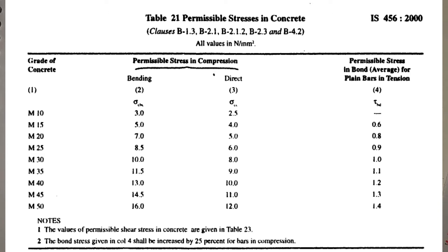For direct compression the factor of safety is 4. Dividing 10 by 4 gives 2.5, dividing 15 by 4 gives approximately 4, and dividing 20 by 4 gives 5. From this you can find all permissible stresses for concrete in direct compression.